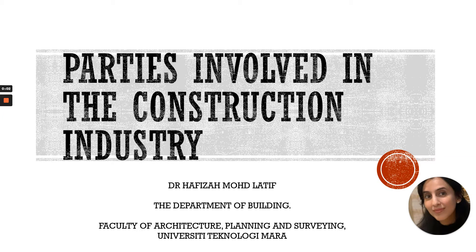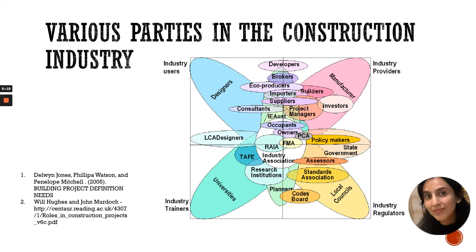Parties involved in the construction industry — you have learned this before, I'm just repeating it in a different way. Basically, you have many players in the construction industry, and you can see in other references as well. This diagram divides the players into four categories: industry users, industry providers, industry trainers, and also regulators.